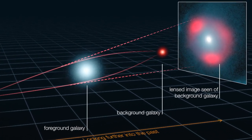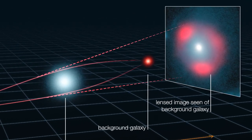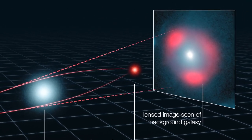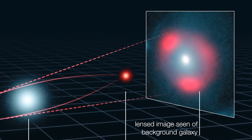The net result is that you would see an image of the more distant mass that looked like a ring around the nearby mass, what scientists call the lensing mass.